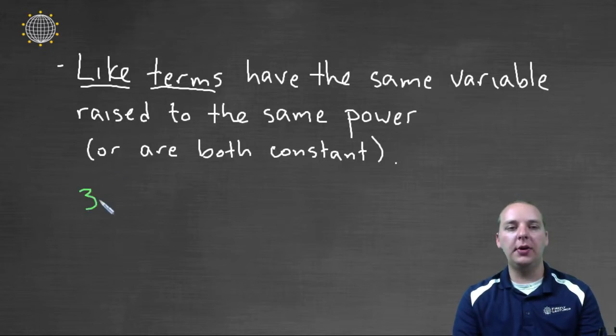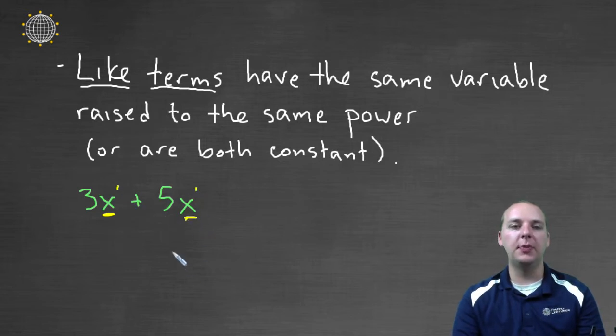Let's say we had three x plus five x. These would be considered like terms, because they have the same variable, x, raised to the same power. These are both to the first power.